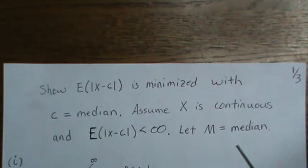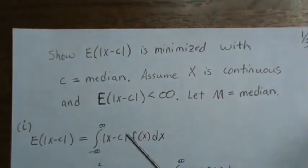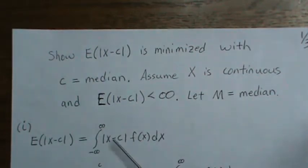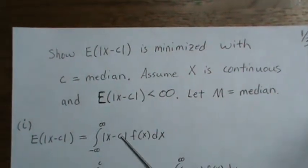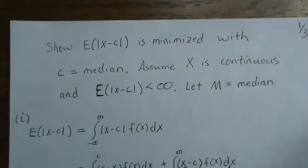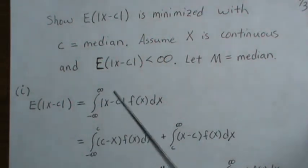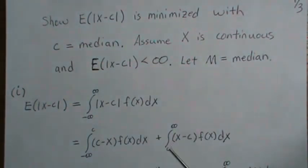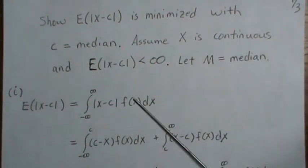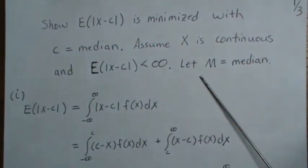We're going to let m be the median. So here is method one. We look at the definition of expected value. To deal with the absolute value, we break it into pieces — whether we're above or below c, since x is the dummy variable here and it's a function of c. If we're below c, then c minus x is positive, which is what we want for the absolute value. And if we're above c, then x minus c is positive. We're going to assume that m, our median, is bigger than c — looking at values of c less than m — and the proof is analogous for the other direction.